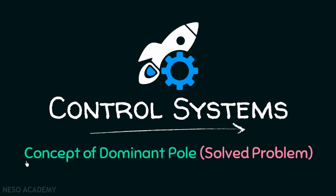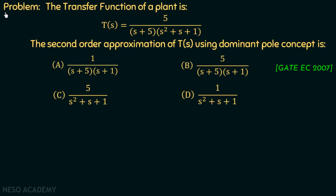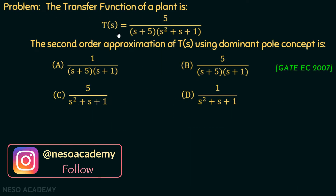In the previous lecture we discussed the concept of dominant pole. Now in this presentation we are going to solve one problem based on the concept of dominant pole. The transfer function of a plant is T(s) equal to 5 over (s + 5) multiplied with (s² + s + 1).